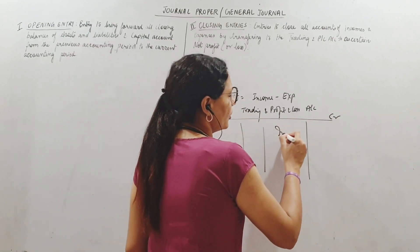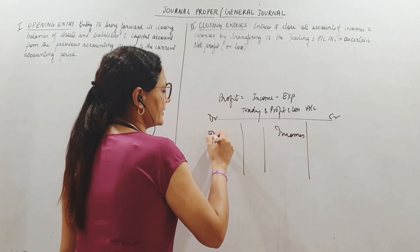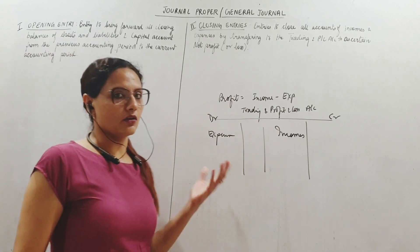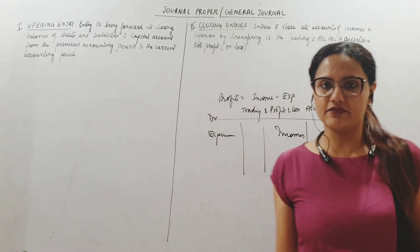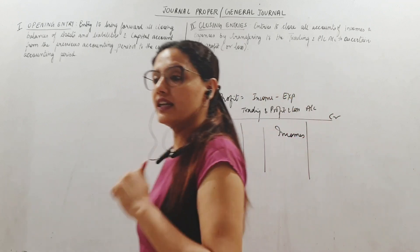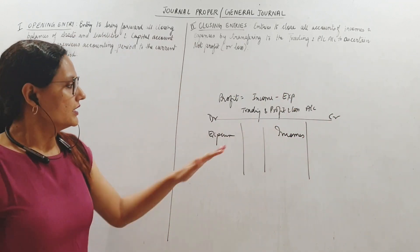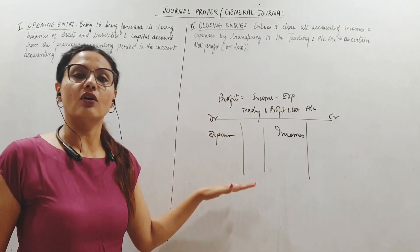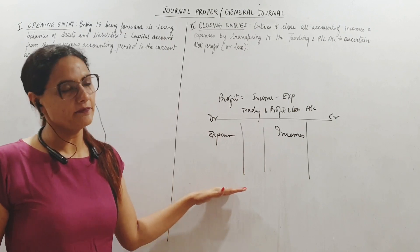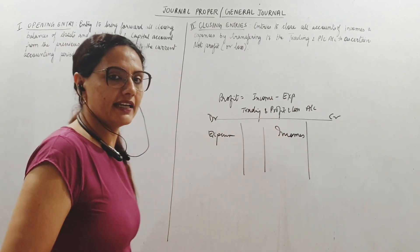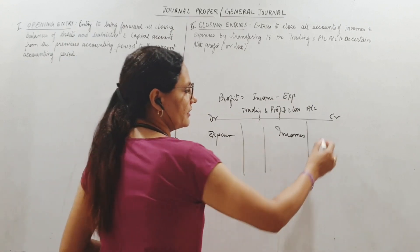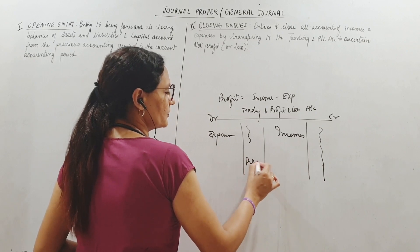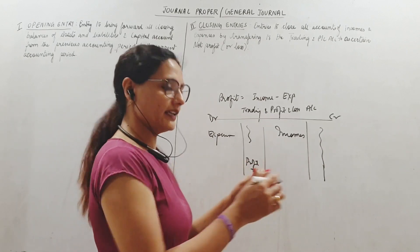So what do we do with all the accounts of incomes and expenditure? We transfer them to an account called trading and profit and loss account, which is prepared every year at the end of the year. This account has a debit and credit side. I will put all incomes here and all expenses here. If incomes are more than expenses, we will have profit on this side, otherwise loss on the other side.